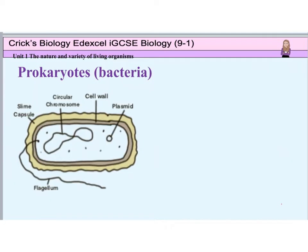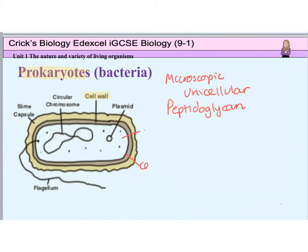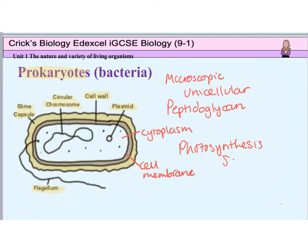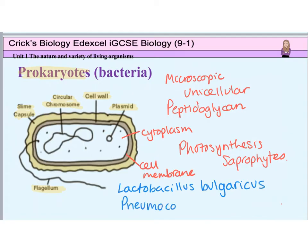Bacteria belong to the kingdom prokaryotes, which means before a true nucleus. They're made from microscopic single cells, so they're unicellular. They have cell walls made of peptidoglycan, which is a mixture of carbohydrates and protein. They also have a cell membrane, a cytoplasm, and plasmids, which are small circles of DNA. They may also have a protective slime capsule around the outside of the cell, and they may use flagella to move along. Their cells do not contain a nucleus, but they do have a small piece of circular DNA instead, known as a bacterial chromosome. Some bacteria can carry out photosynthesis, but most are saprophytes, living off other living or dead organisms. Examples include Lactobacillus bulgaricus, which is a rod-shaped bacterium used in the production of yoghurt from milk, and Pneumococcus, which is a spherical bacterium that causes pneumonia.